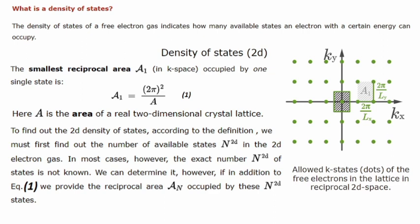The reciprocal space is inversely proportional to the direct lattice: KX = 2π/LX, where LX is the dimension in real space and KX is the wave vector in reciprocal space. The k-space or reciprocal space is an imaginary space and is the Fourier transform of direct space. To find the 2D density of states we must first find the number of available energy states in the two-dimensional electron gas.